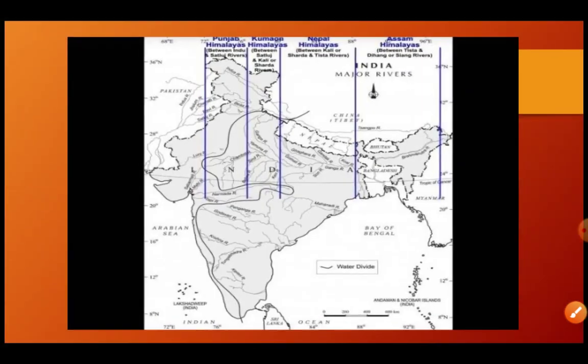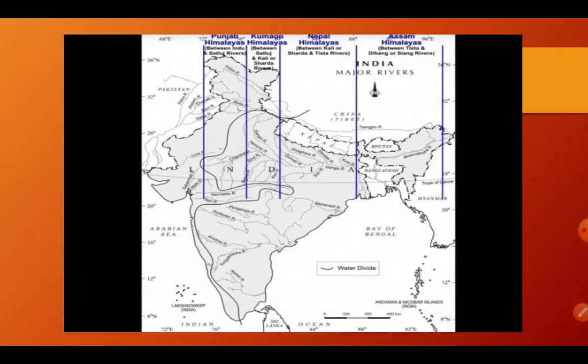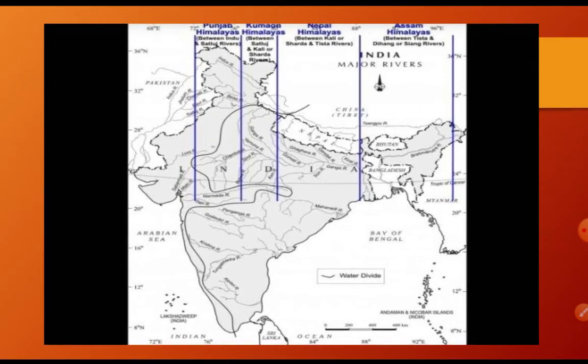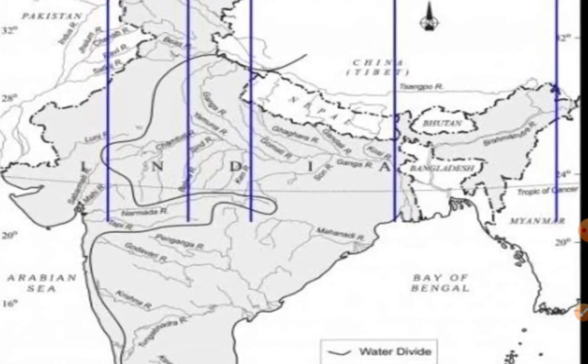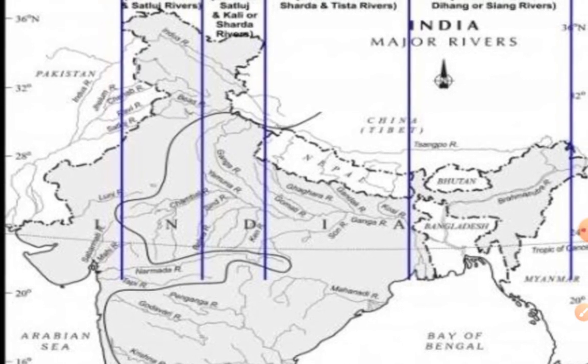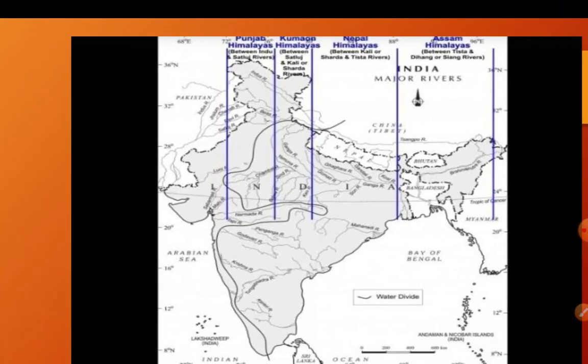If you look at the map you can see which river is where and how you divide it. You will understand this map clearly.